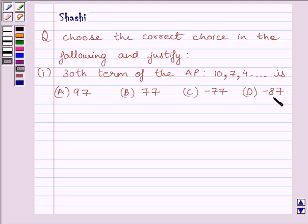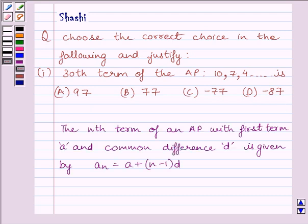We have to choose the correct answer. First of all, let us understand that the nth term of an AP with first term a and common difference d is given by an = a + (n-1)d. This is the key idea to solve the given question.